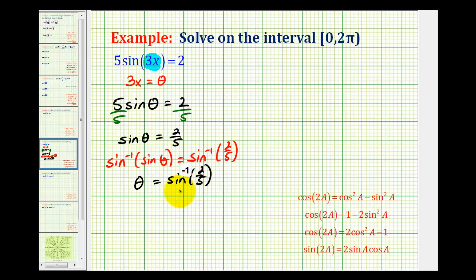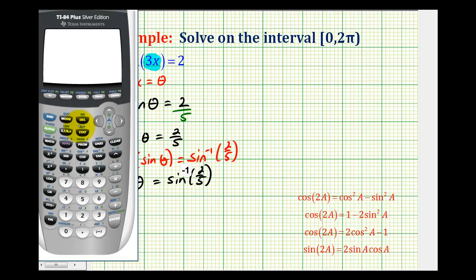Now we'll go to our calculator and determine at least one solution for θ. Let's make sure we're in radian mode, which we are. We'll press second sine, two fifths. So one possibility for θ is approximately 0.4115.